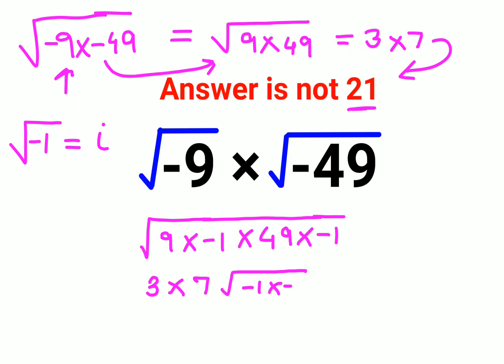You are left with minus 1 into minus 1. As we know that root of negative 1 can be written as i into i. So this becomes 21, and eventually this comes out to be 21 i squared.